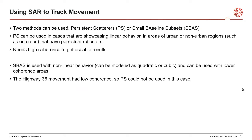When using SAR to track movement, there are two different methods that are used for long time series studies. The first is called persistent scatterers, or PS. The second is called small baseline subsets, or SBAS. PS can be used in cases that are showcasing linear behavior — straight lines, sliding down, subsidence that might occur, a sinkhole perhaps — in areas of urban or non-urban regions that have, say, a rock face where they have persistent reflectors.